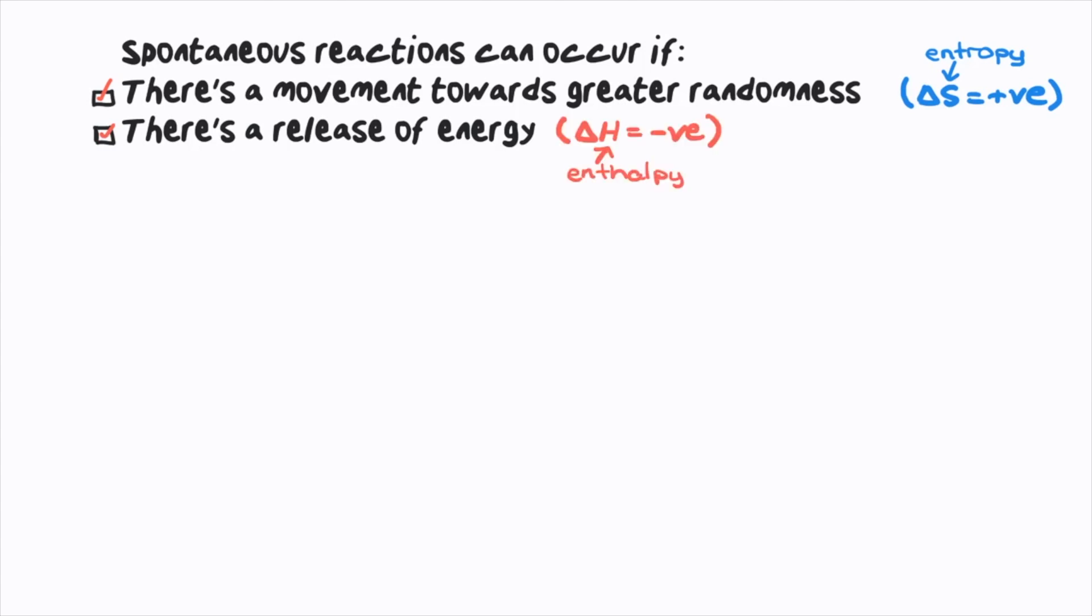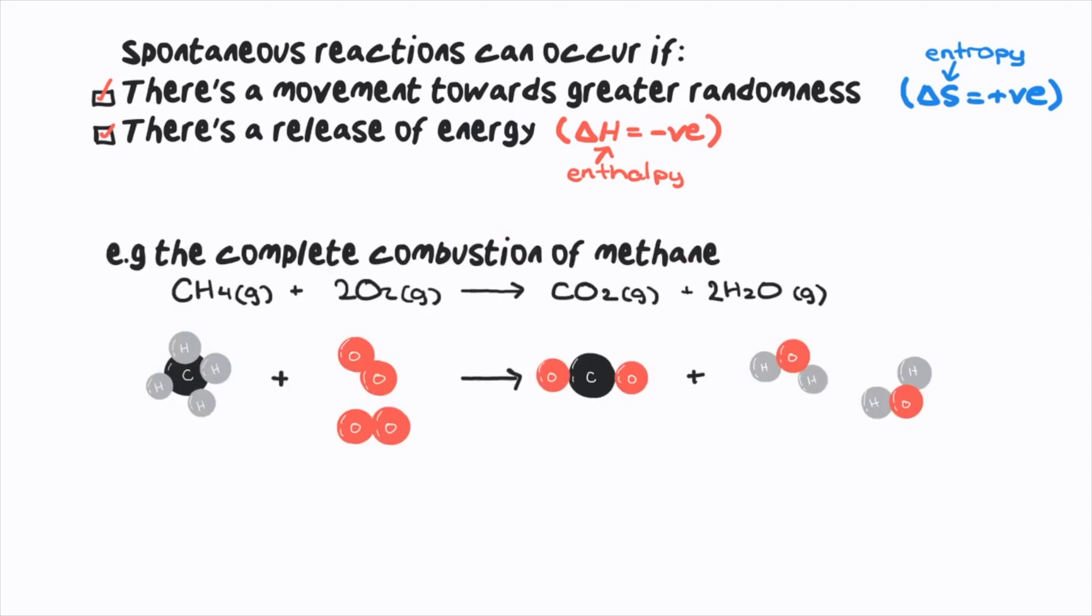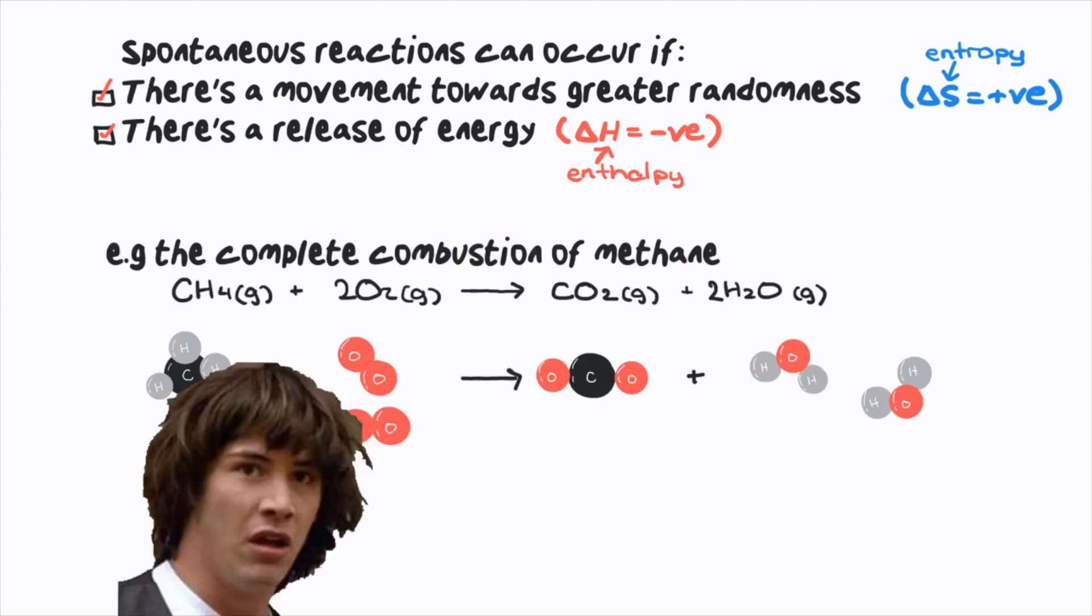The reaction proceeds until all the reactants have been used up to form the products. But what if these drivers oppose each other? Like what if there's a positive change in entropy but also a positive change in enthalpy? Why does it have to get difficult?